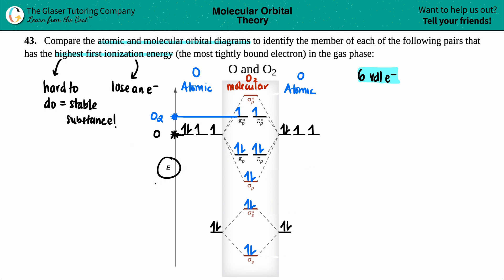In terms of energy wise, the lower the energy, the more stable of a substance. So since just oxygen is lower than O2 in terms of energy, losing the one electron from here, specifically it would be here, would be much harder than losing an electron up top here. So which one would have the first ionization energy, the higher one, it would just be O. And that is your final answer.